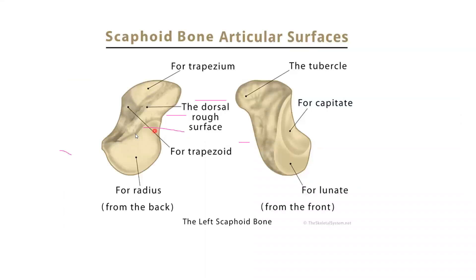The scaphoid bone is named so because it is boat-shaped. The scaphoid bone contributes to the proximal row of carpal bones. To differentiate between left and right scaphoid, look for the tubercle — something projecting out, called the tubercle of the scaphoid. It is present on the lateral aspect distally.